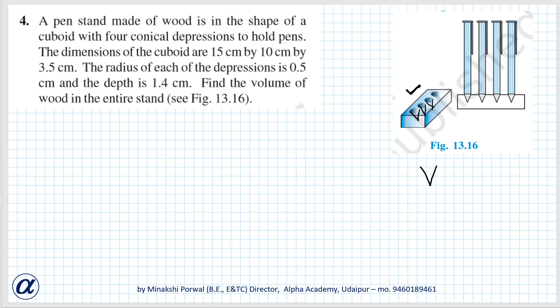Dimensions of cone are given as radius 0.5 cm and height of cone is 1.4 cm. The first step is finding the volume of the cuboid.